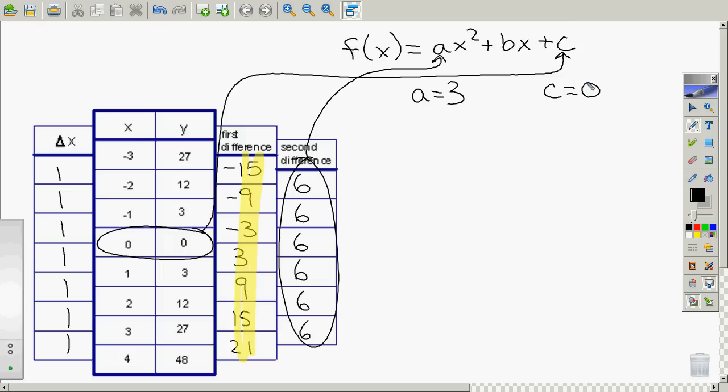So if we rewrite this equation, instead of f of x, I'll write y. We could write y equals, instead of a, I'll put 3x squared plus, I don't know what b is yet, bx plus 0. So it looks like the only thing we've got to figure out is we've got to figure out what is b.